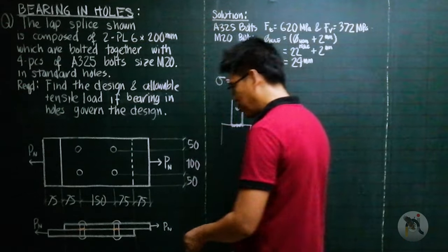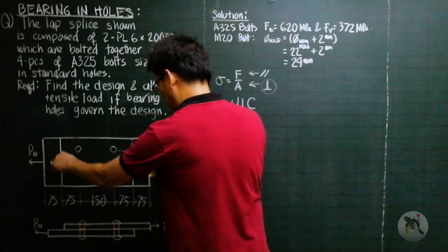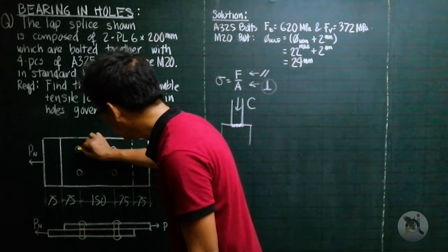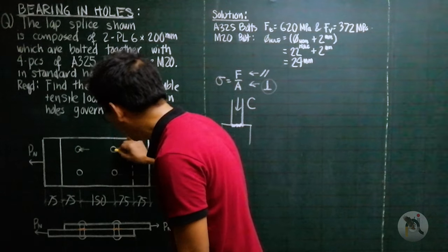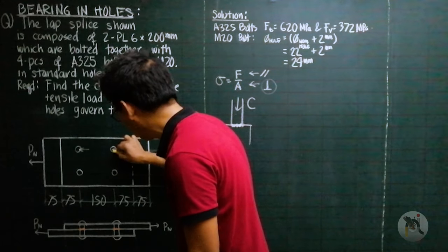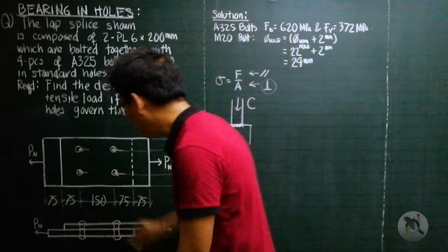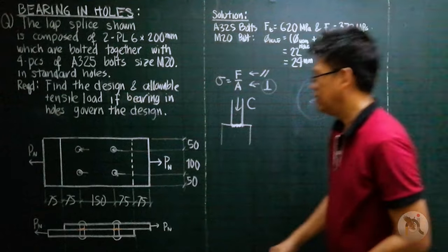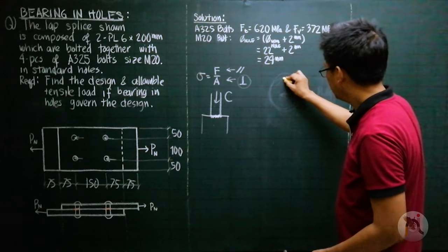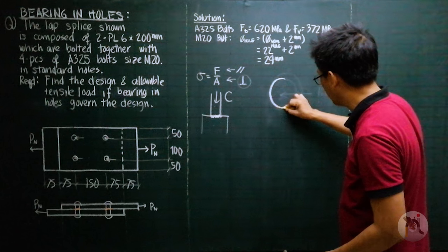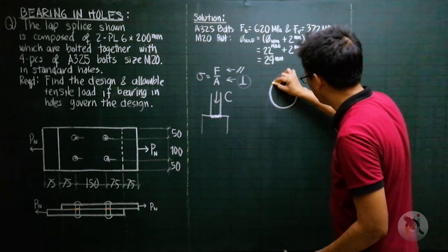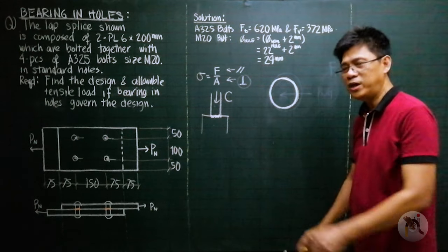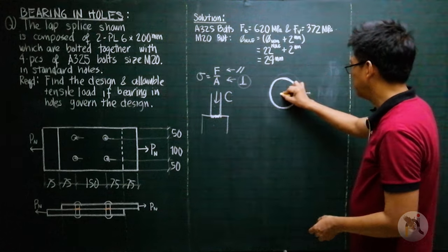Now consider this top plate and this bottom plate. You pull this to the right, so naturally your bolts will react and will push the plate to the left. If we isolate the action in the bolt and in the plate, let us magnify this portion — let us say that this is our bolt.